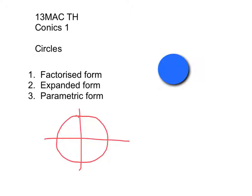But this year, we're going to think about a circle as being a locus of points. So a circle is all the points that satisfy the condition that they are a fixed distance r away from the centre of the circle.